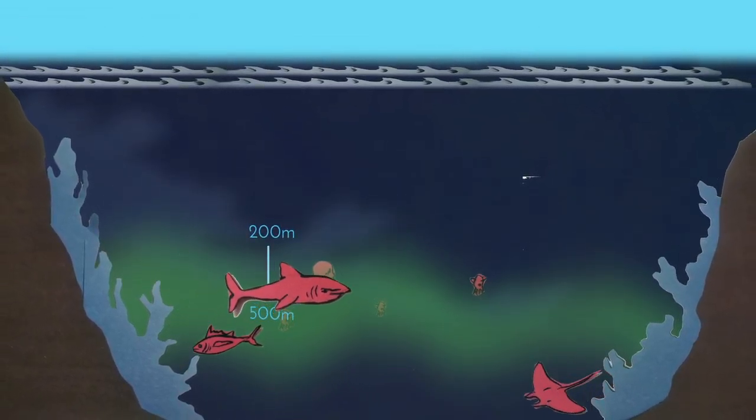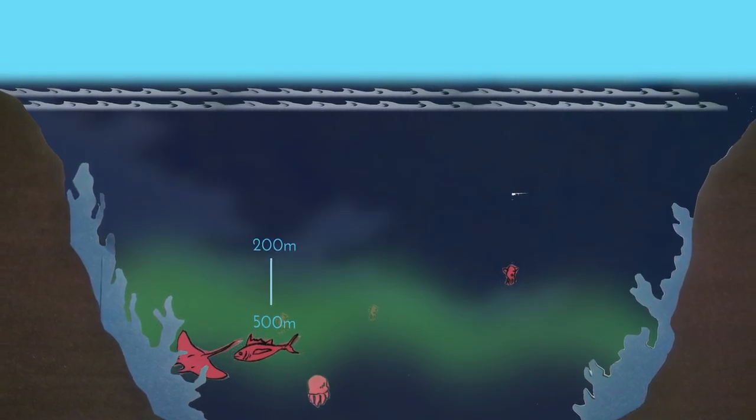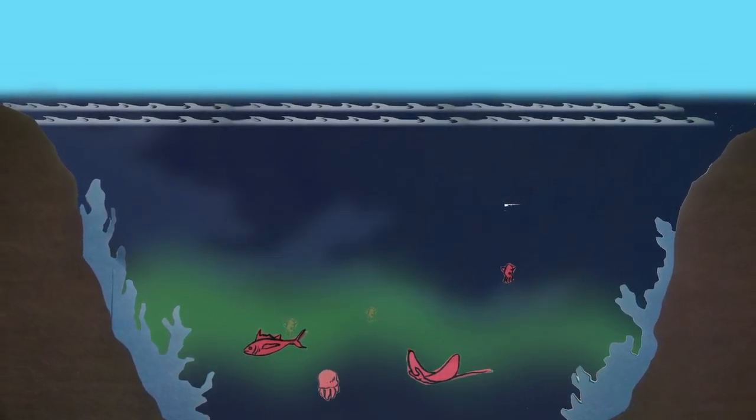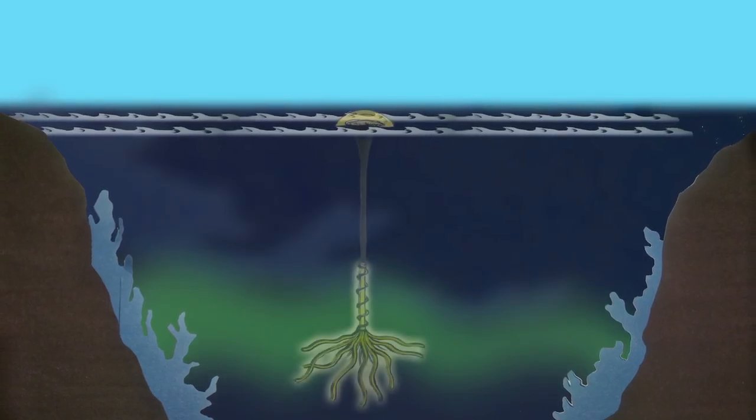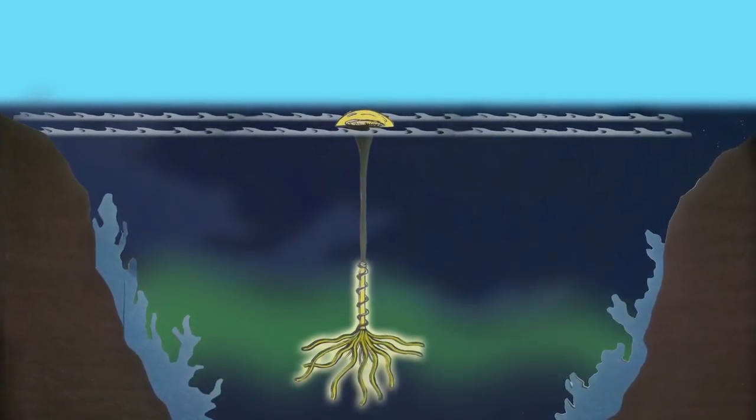Pumping nutrients up to the surface is challenging, requiring big structures and a lot of energy. But what if we could bring the sunlight down to the deep? Deep Dawn envisions a means for channeling sunlight to the depths through a simple fiber optic cable.